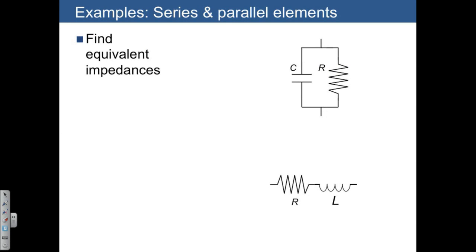Let's do a quick example of equivalent impedances. In this first system, let's find an equivalent impedance, maybe we'll call it ZEQ, for the resistor and the capacitor. And we know that 1 over ZEQ is equal to 1 over Z1 plus 1 over Z2, where Z1 is the impedance of the capacitor, which is 1 over CS. And Z2 is the impedance of the resistor, 1 over R.